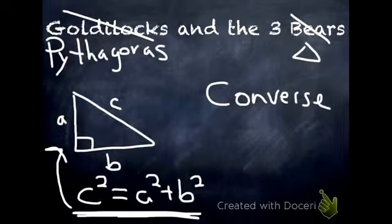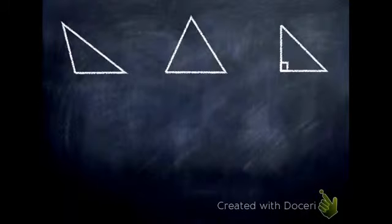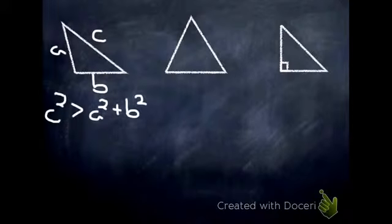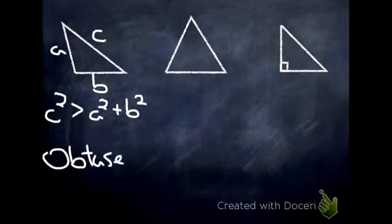So Pythagoras went walking through the woods and came across a cottage, and inside that cottage were three triangles. He walked up to the first triangle and noticed its longest side squared was greater than the sum of the lengths of the other two sides squared. And because it was greater than, it reminded him of an angle that's bigger than 90. And when that angle is bigger than 90, it's an obtuse triangle.